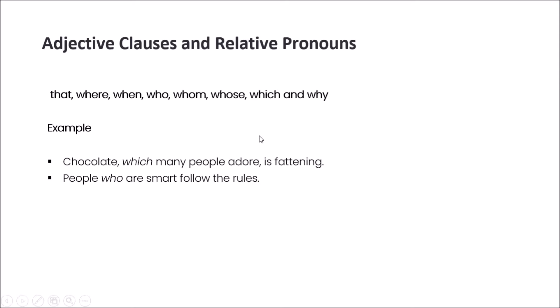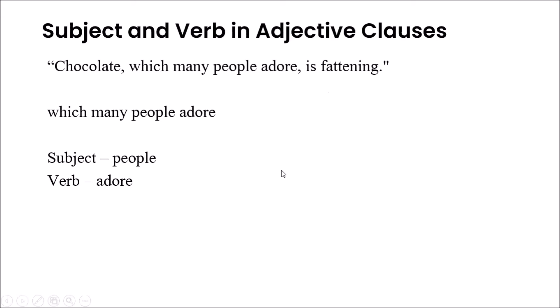For example, 'chocolate, which many people adore, is fattening.' What is the relative pronoun here? Which. 'People who are smart follow the rules.' What is the relative pronoun here? Who. Each of the adjective clauses begins with a relative pronoun. This connects it to the noun being described, which comes directly before the relative pronoun in the sentence.